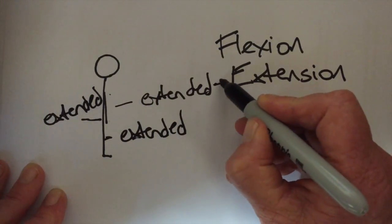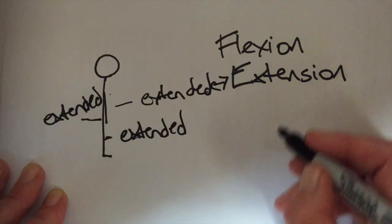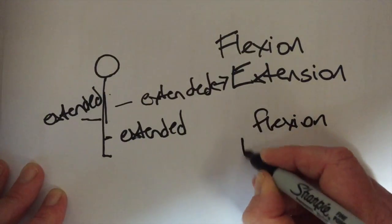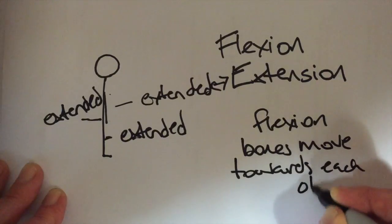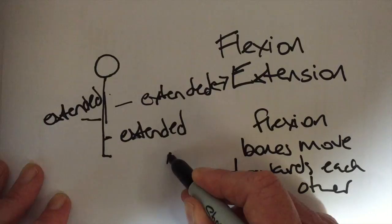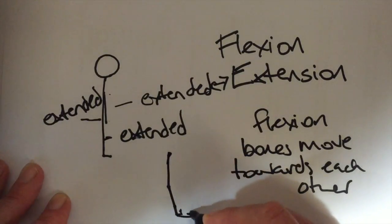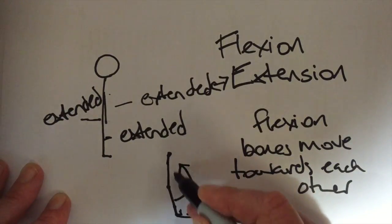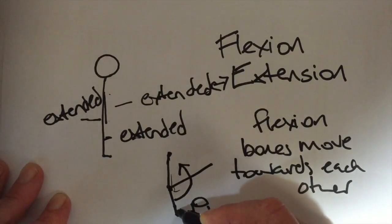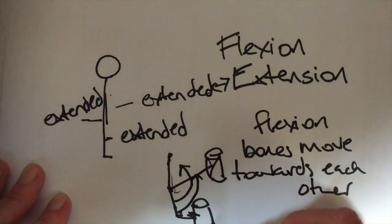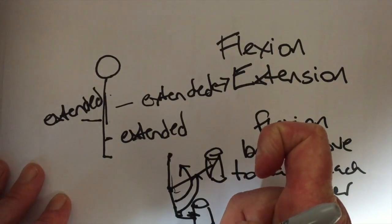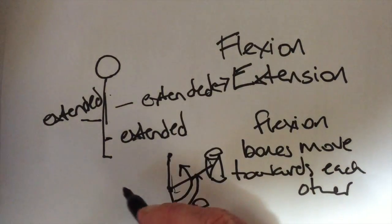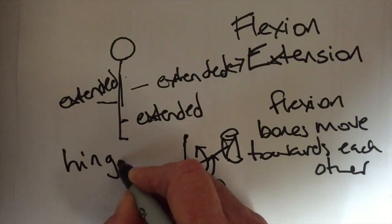Flexion is when the bones move towards each other and the bones are effectively bending. If this was the elbow and you want to get it to your mouth, you need to move it so this bone will stay here but this bone moves up to get closer to your mouth so you can drink. Flexion is when the bones effectively move towards each other, extension is when they straighten. This happens at hinge joints and also ball and socket joints.